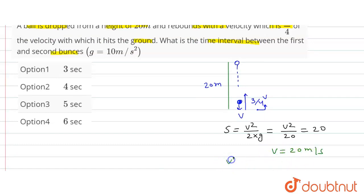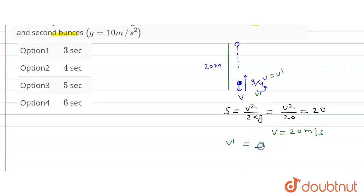So from here, v will be how much? v is equal to 20 meters per second. Now v dash here, let's assume this is v dash. So this v dash is equal to how much? This will be three-fourths into v, that is equal to 15 meters per second.